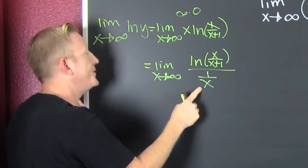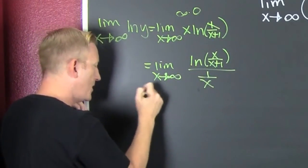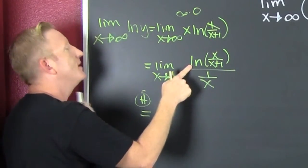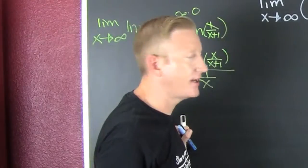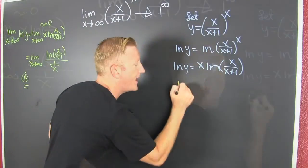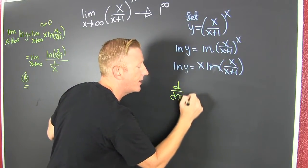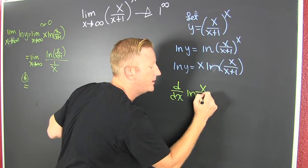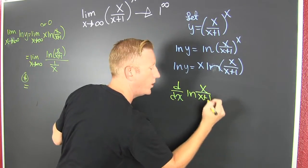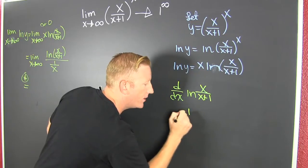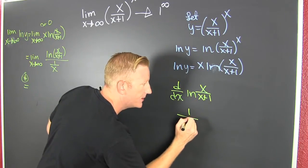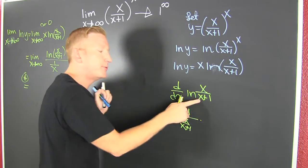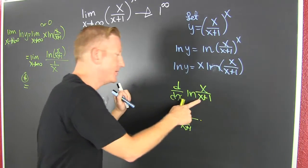When we have zero over zero, then we can use L'Hôpital's. Let's look at the derivative of that guy over here. If I have d/dx of the natural log of X over X plus one, then that's one over the argument X over X plus one, times the derivative of that argument.